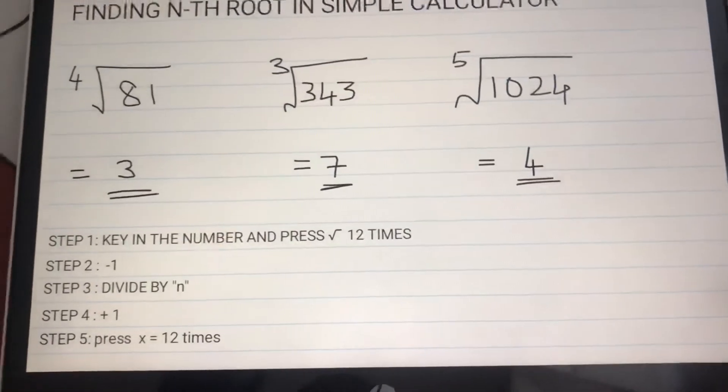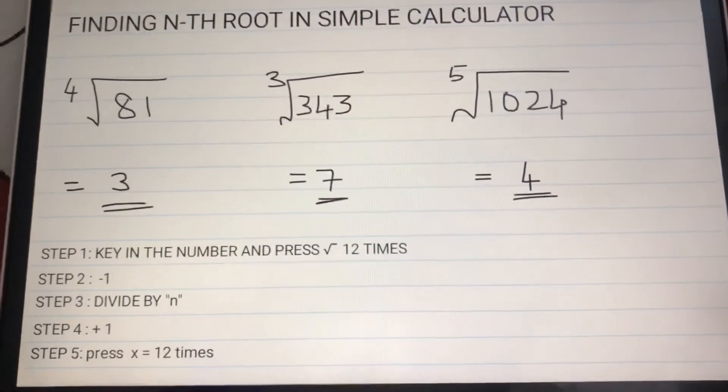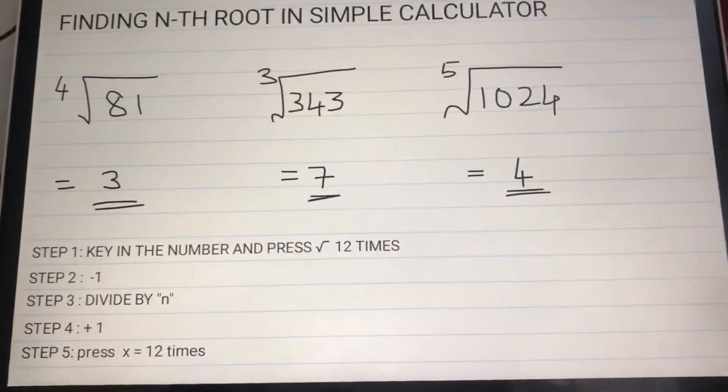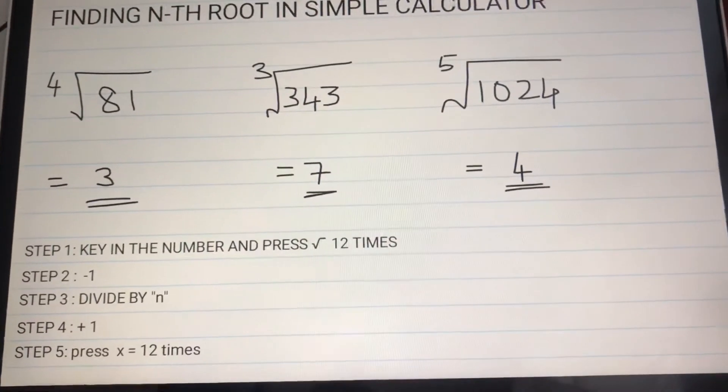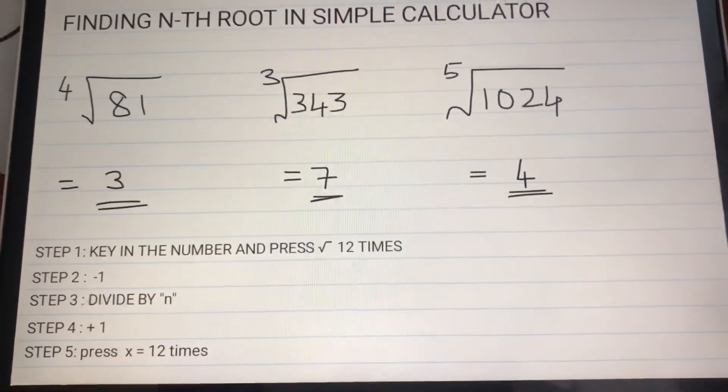There are five steps in it. Step one: key in the number and press square root 12 times. Step two: minus one.